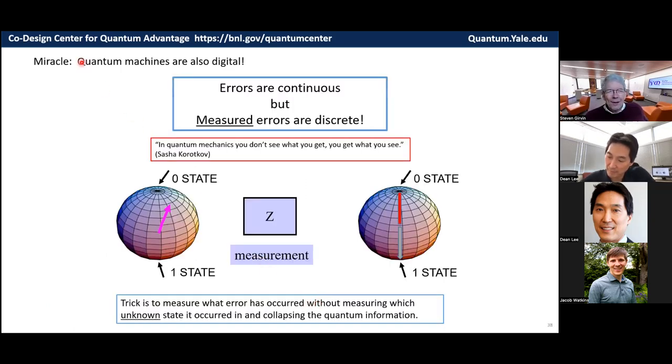So I showed you that analog machines can't correct errors, but quantum machines are also digital because errors can develop continuously. But when you measure them, they become discrete. And so, again, it's this thing that Sasha says that in quantum mechanics, you don't see what you get. You get what you see. If you look and see that there was no error, then even if there was an error before, there isn't one now because you saw that there wasn't one. If you look and ask, was there an error? The answer is always yes or no. And so that discreteness is what lets us do error correction. But you have to do it very, very carefully. The trick is to measure what error occurred without measuring the unknown state in which the error occurred. That would collapse the information you're trying to preserve. And it's very subtle, but it can be done.